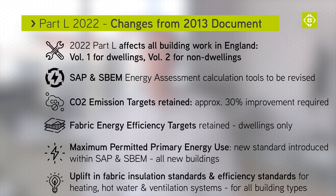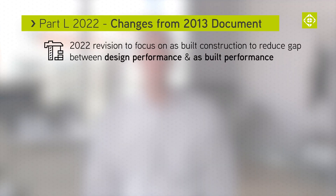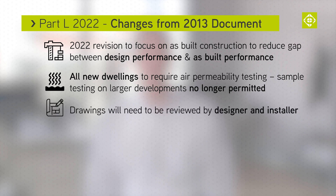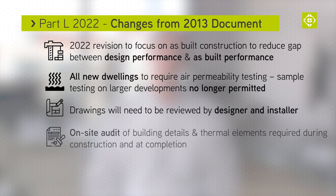The 2022 revision will place greater focus on as-built construction to reduce the gap between the design performance and the as-built performance. All new dwellings will require air permeability testing — sample testing on larger developments will no longer be permitted. Drawings will need to be reviewed by the designer and the installer, and an on-site audit of building details and thermal elements will be required both during construction and at completion for building regulation approval.